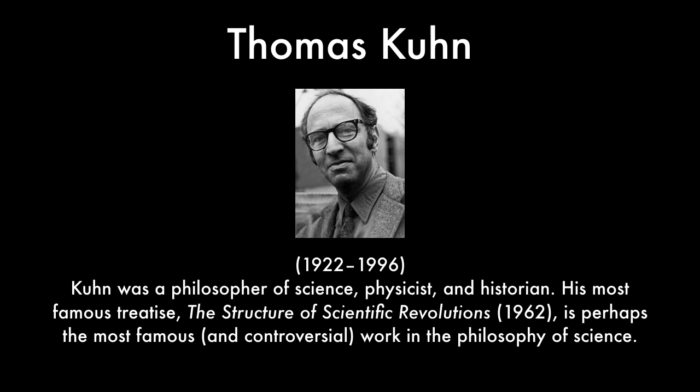Enter philosopher of science Thomas Kuhn. Kuhn, in addition to being a philosopher of science, was also a physicist and a historian. His most famous treatise, entitled The Structure of Scientific Revolutions, is perhaps the most famous and controversial work in all of the philosophy of science. One of the things that interested Kuhn about the history of science was how scientists in fact decide between competing theories when the empirical evidence is not enough to decide for them.